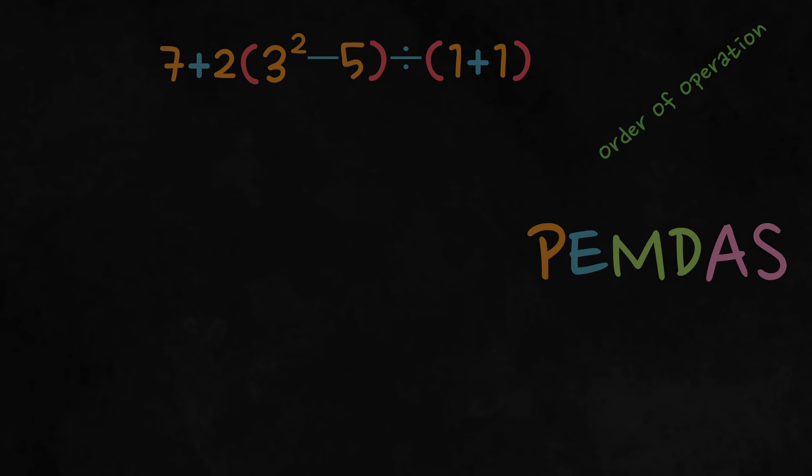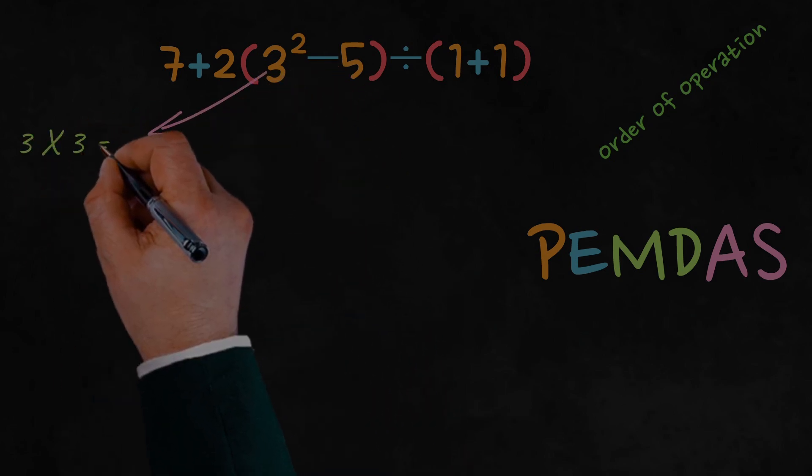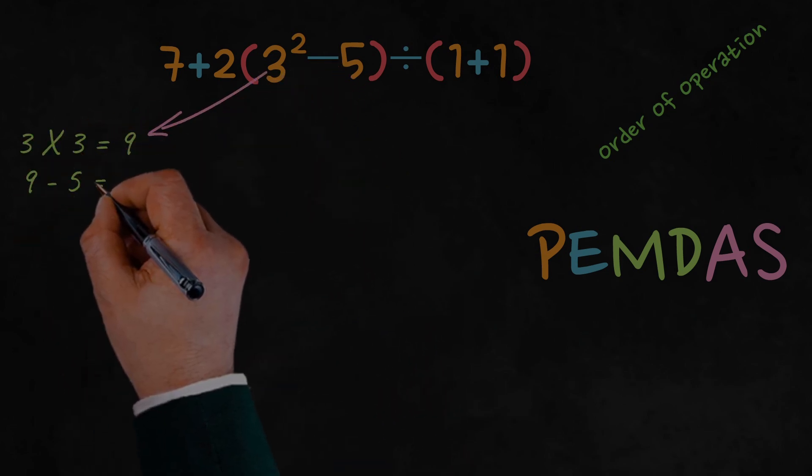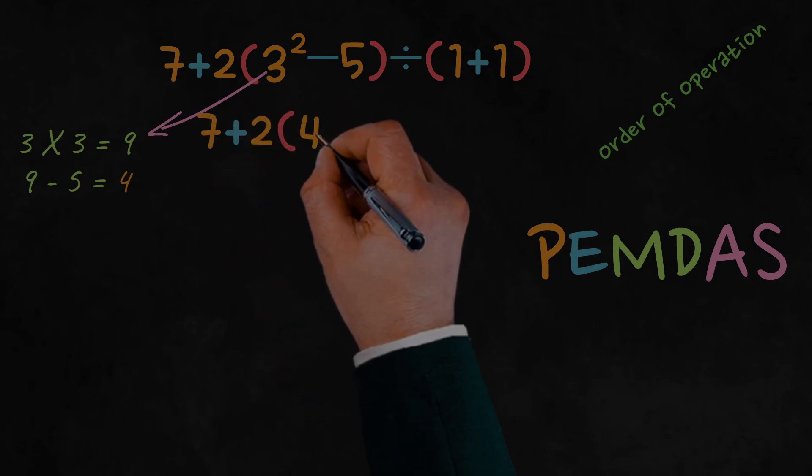First, we simplify inside the parentheses, 3 squared minus 5. Calculating 3 squared gives us 9, so we have 9 minus 5, which simplifies to 4. Now, our expression is 7 plus 2 times 4.